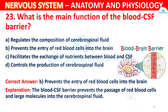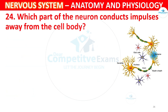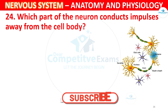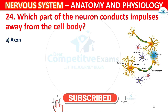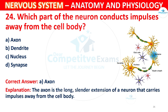Question 24: Which part of the neuron conducts impulses away from the cell body? Options: A) Axon, B) Dendrite, C) Nucleus, D) Synapse. The correct answer is A, Axon. The axon is the long, slender extension of a neuron that carries impulses away from the cell body.